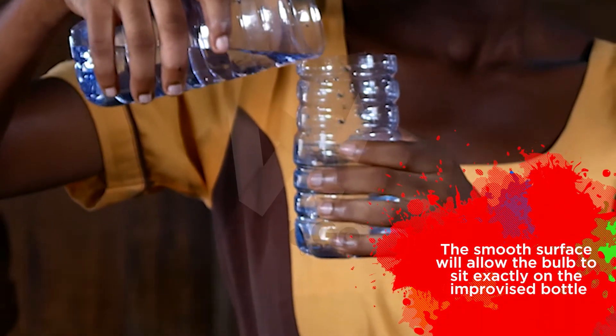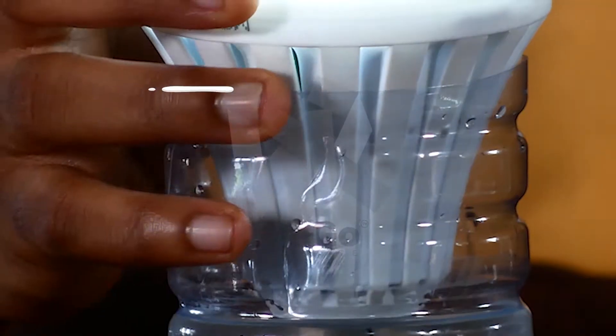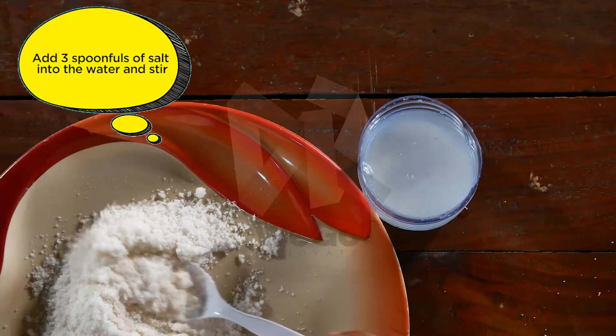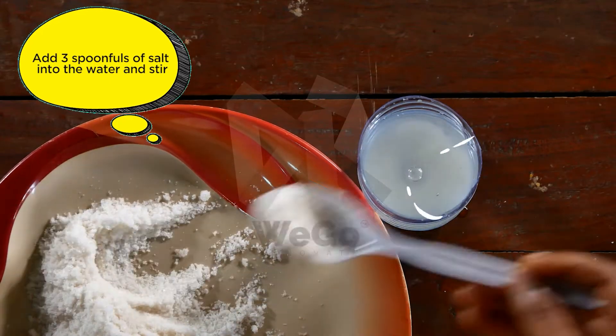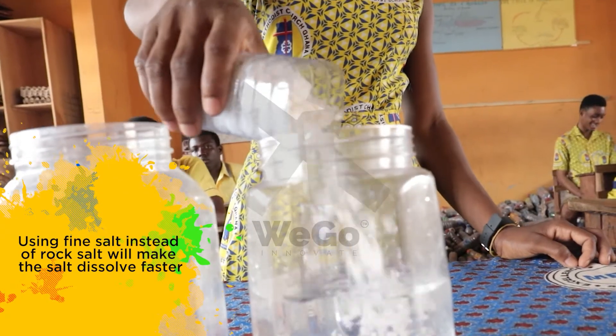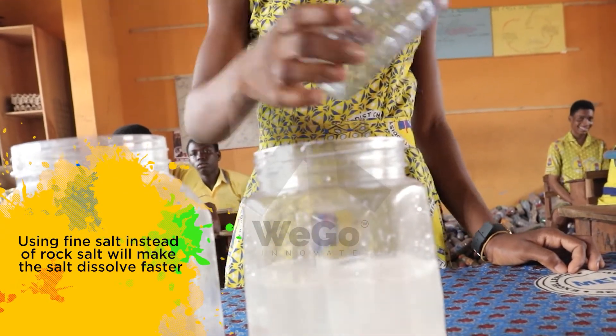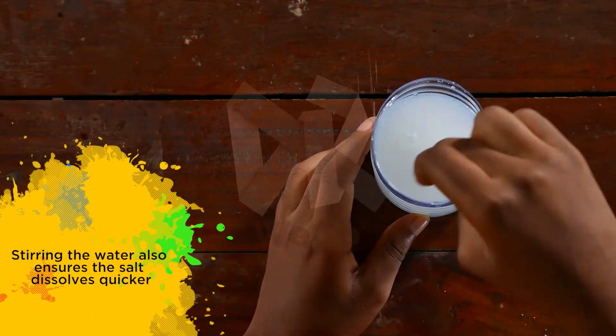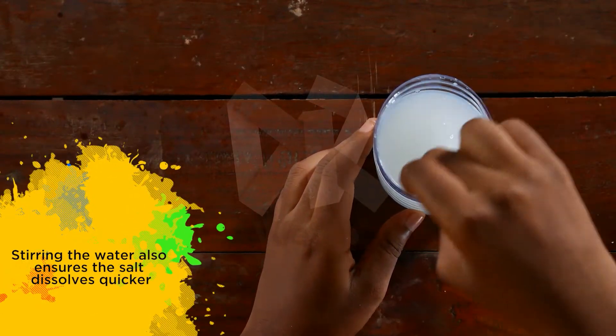Add three spoonfuls of salt into the water and stir. Using fine salt instead of rock salt will make the salt dissolve faster. Stirring the water also ensures that the salt dissolves quicker.